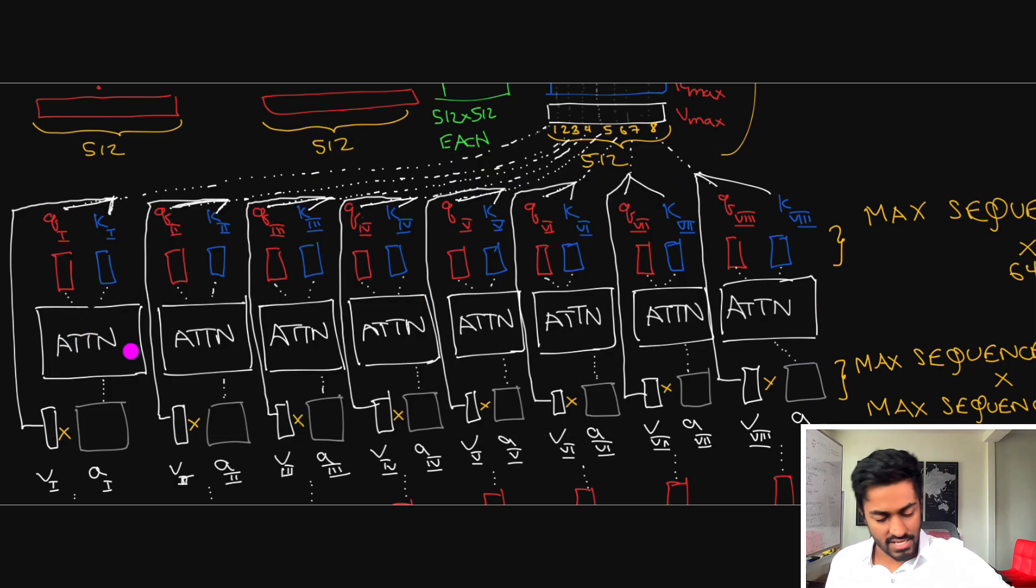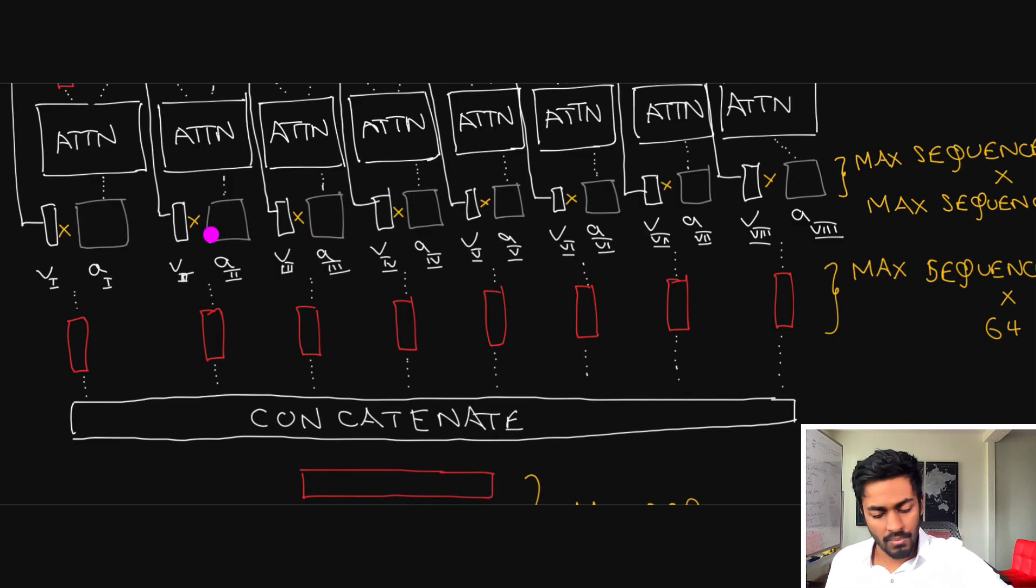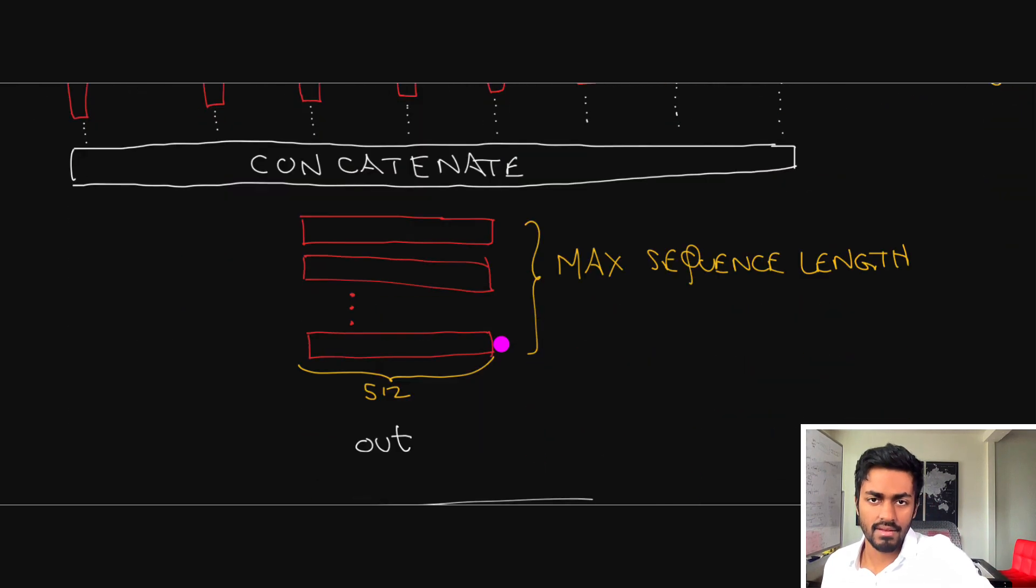Now once we pass it through the attention unit we will get attention matrices which is going to be sequence length cross sequence length that's the number of words cross the number of words in order to see exactly how much attention each word should pay to the other. We then multiply it by every head's value matrix which is essentially the concatenation which is essentially going to be the sequence length cross 64 and so when we multiply these matrices together we're going to get eight individual vectors which are going to be the maximum sequence length cross 64 each and then we just concatenate them when since there's eight it'll be maximum sequence length cross 64 times 8 which is 512.